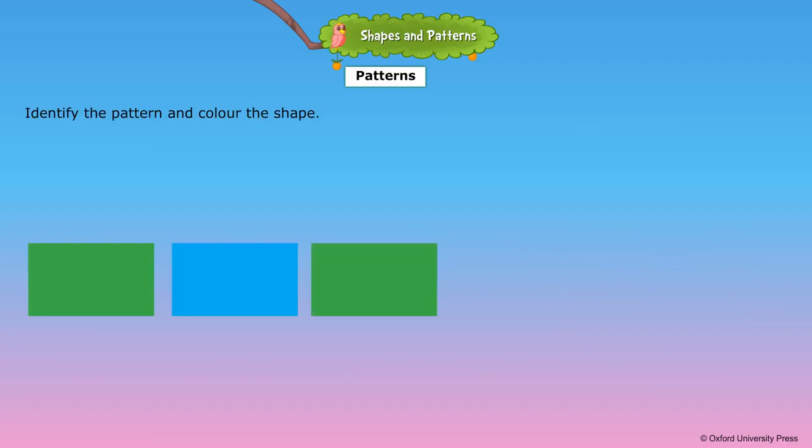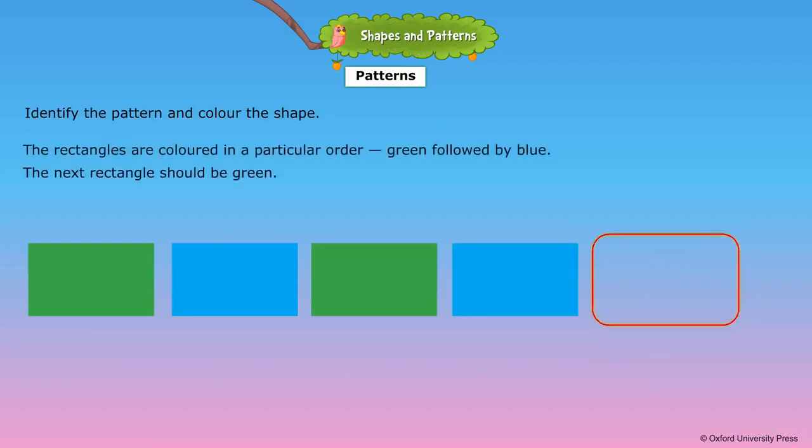Identify the pattern and color the shape. The rectangles are colored in a particular order. Green followed by blue. The next rectangle should be green.